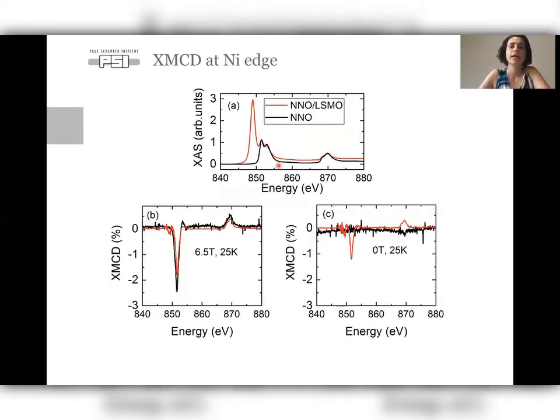Then we look at the nickel edge. This is the X-ray absorption again for a thick NNO film as a reference and the bilayer. In the bilayer, we have this additional strong peak, which comes from the lanthanum of the LSMO. But the nickel, which are this L3 and L2 here, they look very similar again between the bilayer and the single layer, showing that there is not a very strong change of valence states on the bilayer. And here again, I have the XMCD at 6.5 Tesla and at 0 Tesla. So at 6.5, surprisingly, both of them show an XMCD.